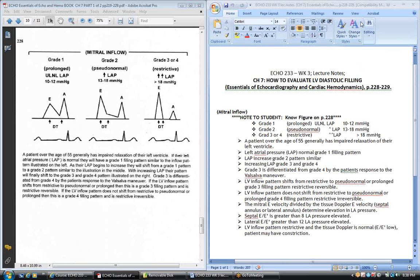Welcome to Academy of Ultrasound. I'm John Sheldon, one of the instructors for the Academy, and tonight's class is going to be talking about Echo 233, Week 3, still dealing with Chapter 7 of Essentials of Echocardiography and Hemodynamics. We're going to continue our evaluation on how to evaluate LV diastolic filling. Tonight's lesson deals with pages 228 and 229 in your Essentials Manual or textbook, and again that's Chapter 7.